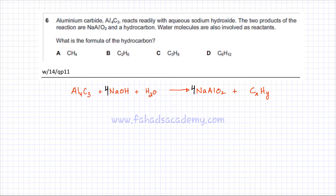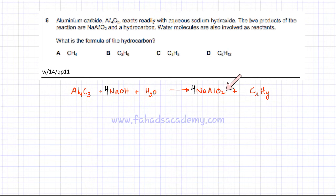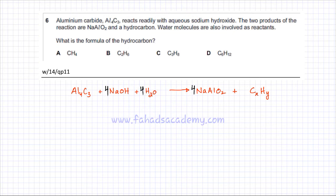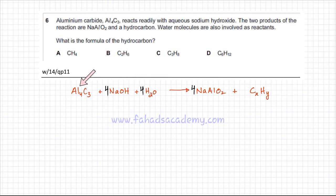Na and Al are now balanced. We need to balance oxygen. On the right hand side, there are two oxygens per NaAlO2 molecule, and with four molecules that gives eight oxygens. So there should be eight oxygens on the left hand side. With four oxygens in NaOH, we need four H2O molecules to make up the remaining four oxygens. Oxygen is now balanced.